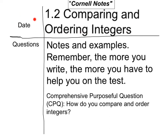In quadrant two, there's the date — whatever date it is. Do not write the word 'date,' you write the actual date. In quadrant three, you write questions that you have about the lesson, because you're going to be including those in the Ed Puzzle part of the video. In quadrant four, this is where you write your notes and examples. Remember, the more you write, the more you have to help you on the test. I am giving open note tests, so have really good notes.